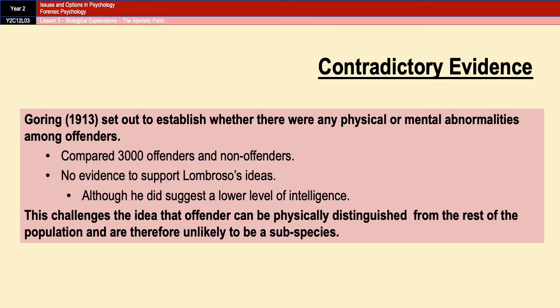There is also contradictory evidence to Lombroso's work. Research done by Goring in 1913 set out to establish whether or not there were any physical or mental abnormalities among offenders. He compared 3,000 offenders and 3,000 non-offenders, and he found no evidence to support Lombroso's idea. Although he did suggest that criminals tend to have a lower level of intelligence than non-criminals, other than that he completely discredited Lombroso's theory. This challenges the idea that offenders can be physically distinguished from the rest of the population and suggests they are unlikely to be a genetic subspecies.